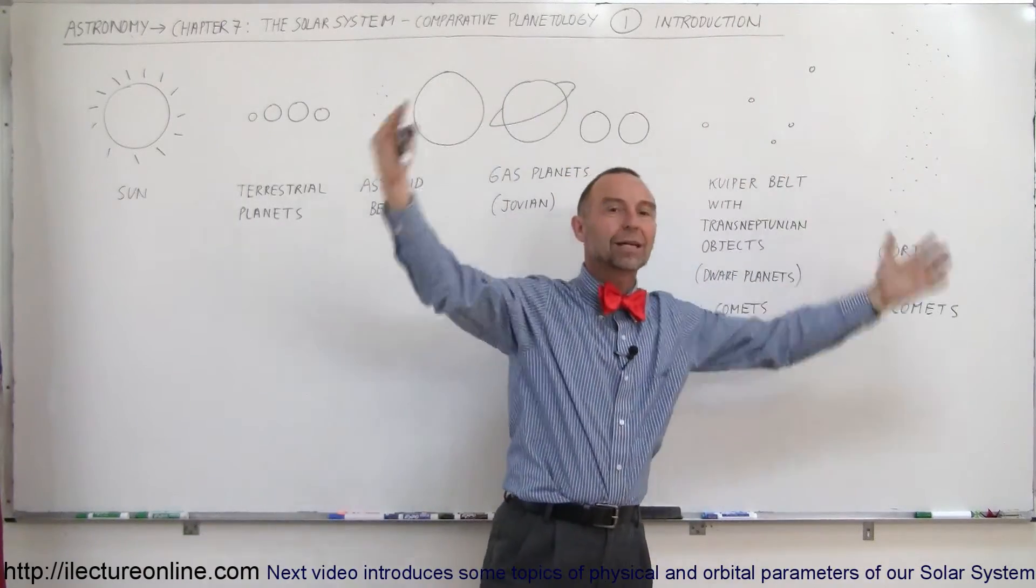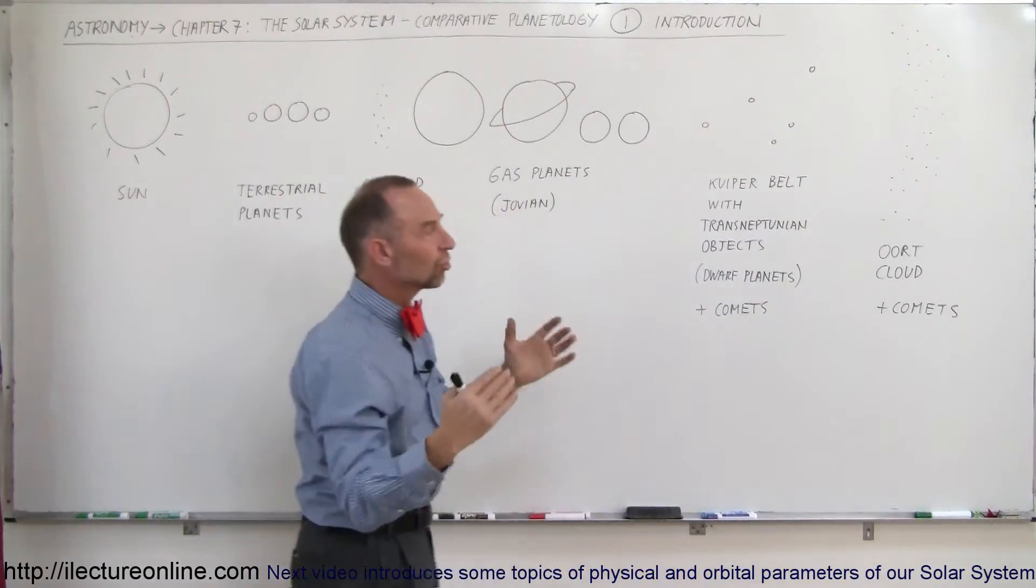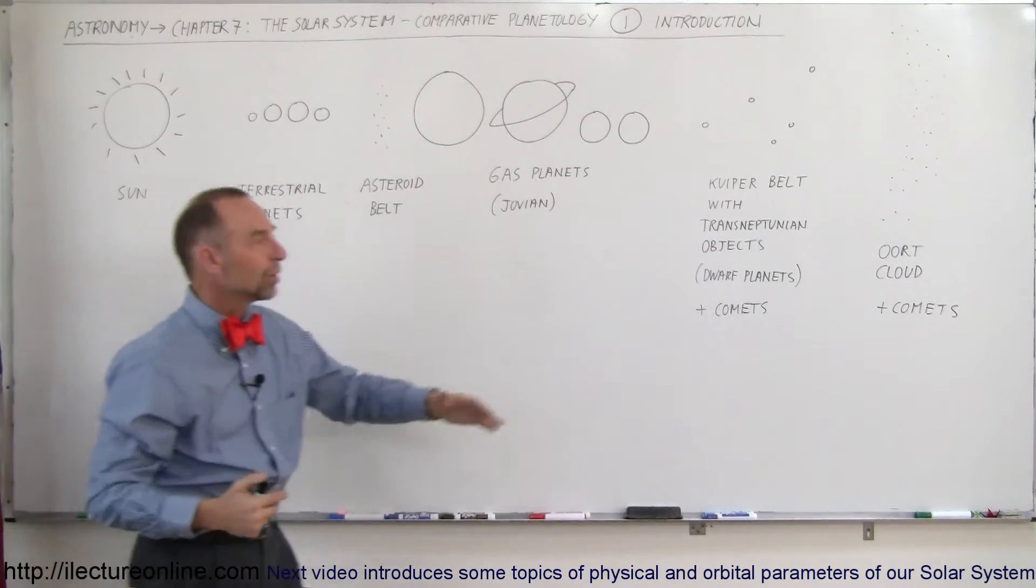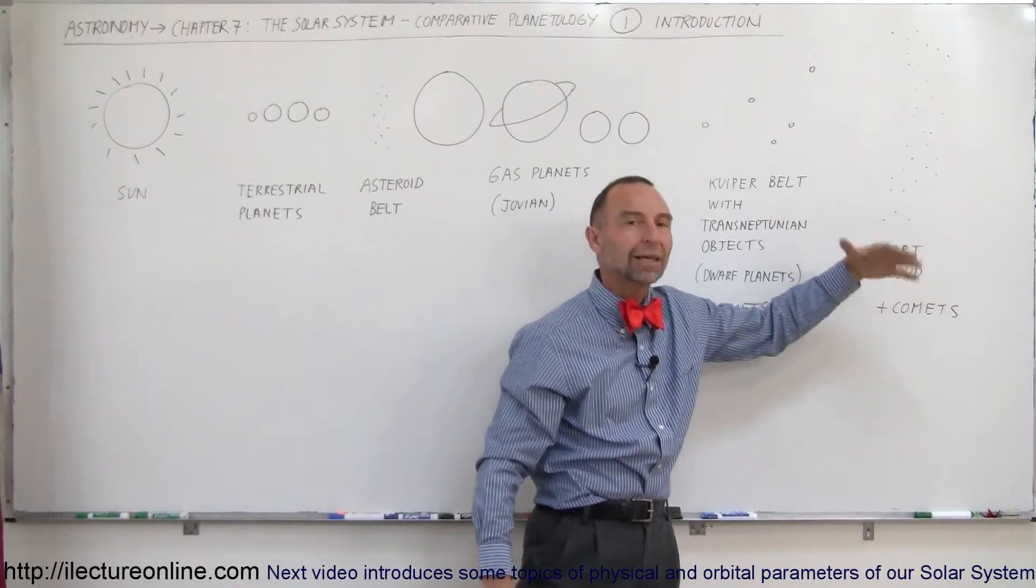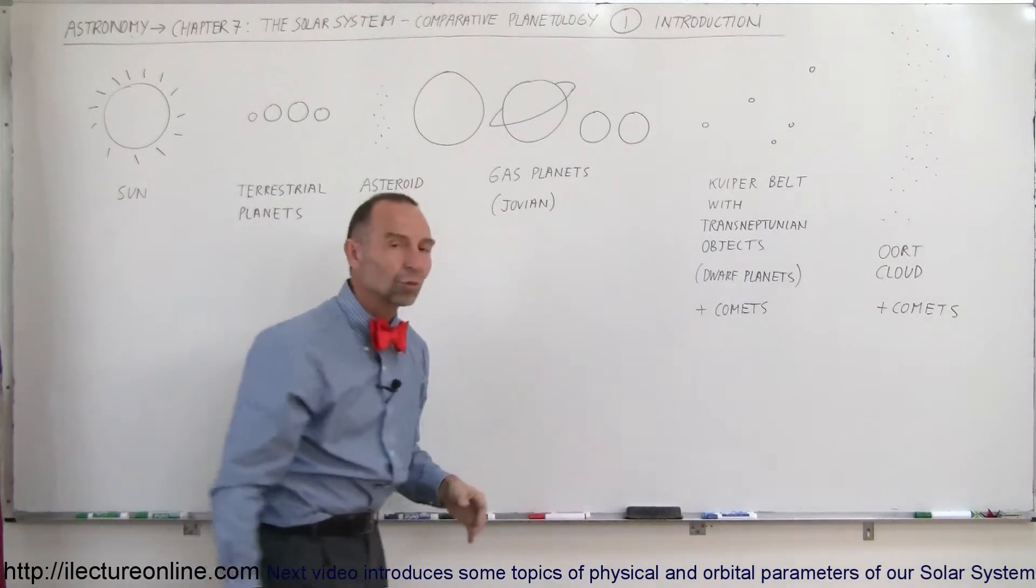and then far beyond that, completely encompassing in all directions in a spherical shape, an Oort Cloud that's filled with the remnants of the formation of the solar system, basically some rock and primarily ices and frozen gases way out there.